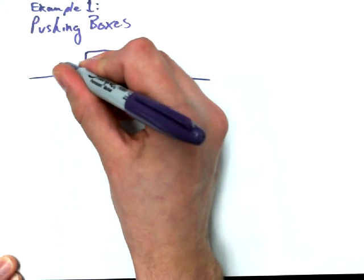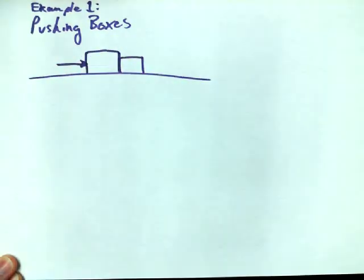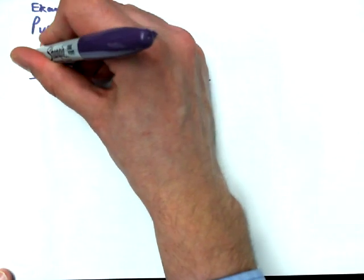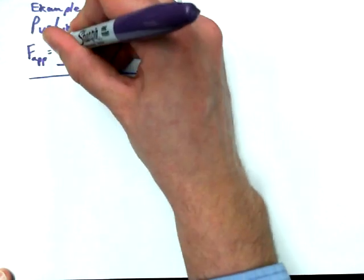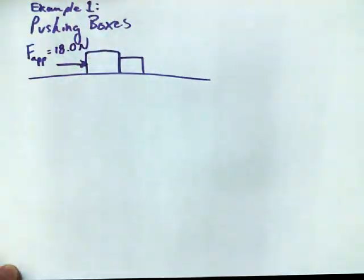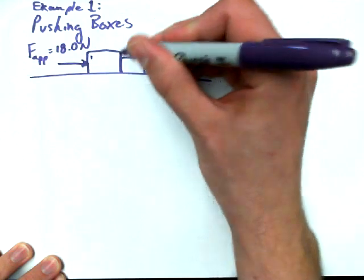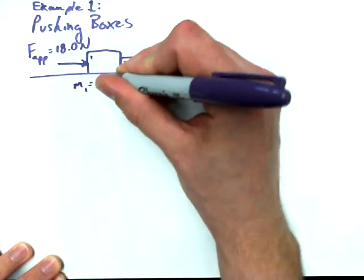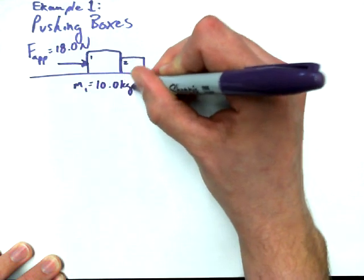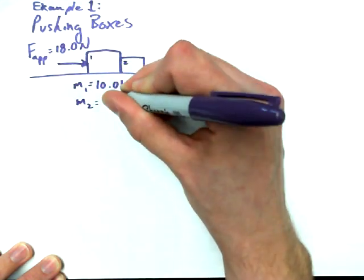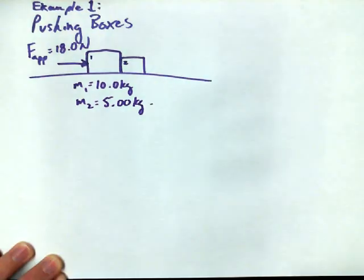So if we've got two boxes, let's say that we have a pusher. I'm not going to dress this up with a fancy story. I'm just going to say that arrow represents somebody pushing on some boxes. The pusher is able to push with 18.0 newtons. I want to say this is mass one and this is mass two. Mass one has a mass of 10.0 kilograms, and mass two has a mass of 5.00 kilograms.